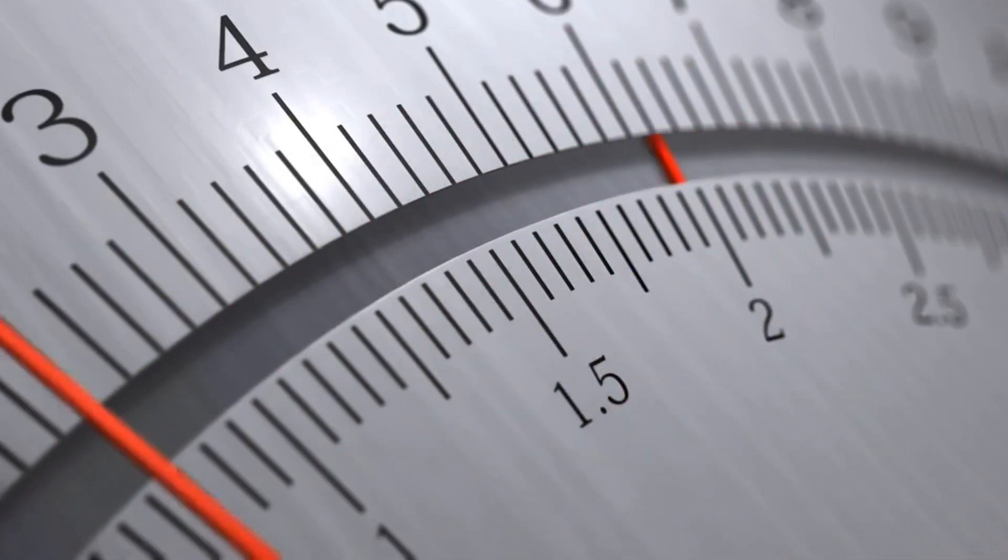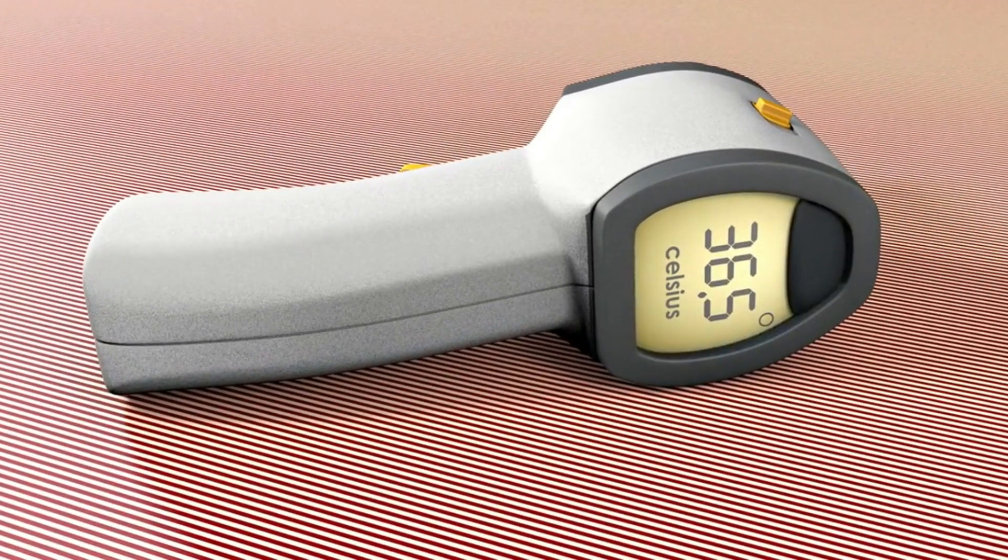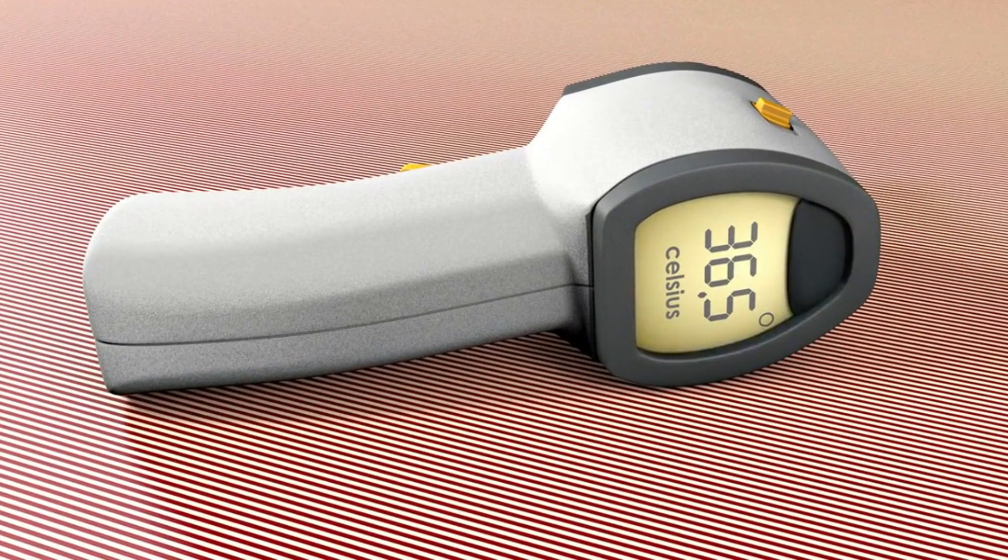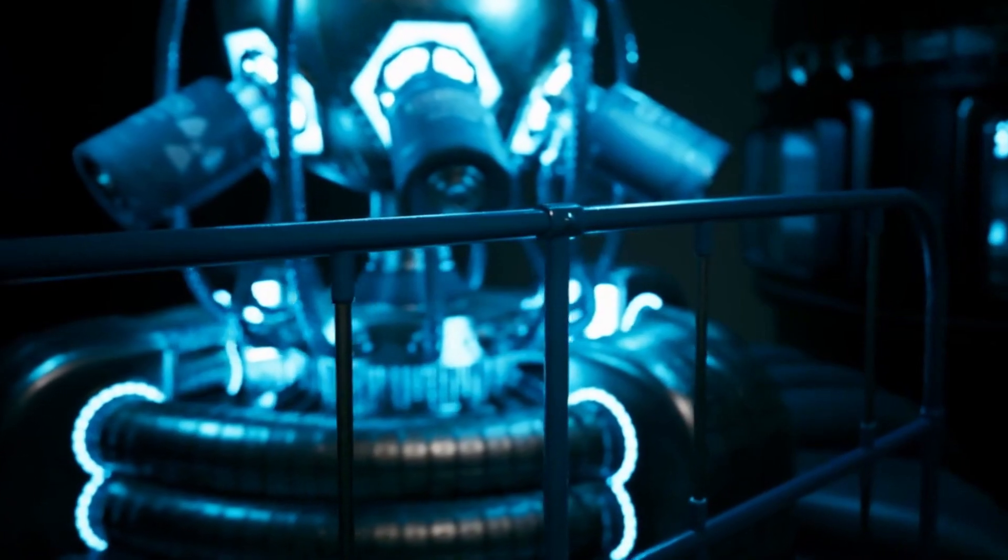These devices or methods are called measurements or sensors, and they are very useful and important for science and technology. However, measurements and sensors are not perfect. They have some limitations and errors that affect how close their output is to the true value of the physical quantity.